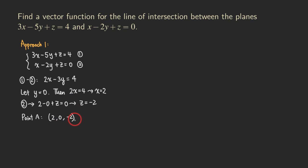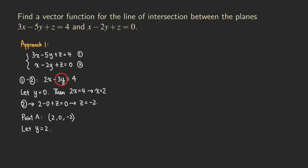Now, what about the other point? We plug in a different number. It would be a good idea to choose y = 2, because if you put y = 1, you'd get a fraction for x. By choosing y = 2, we can avoid fractions for easier calculation. So we get 2x − 6 = 4, which gives us x = 5.